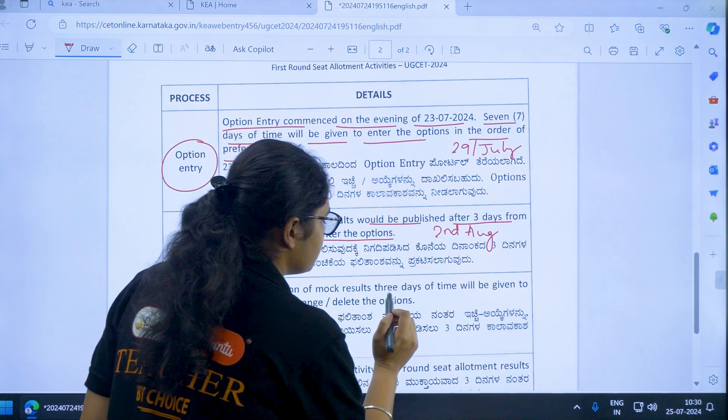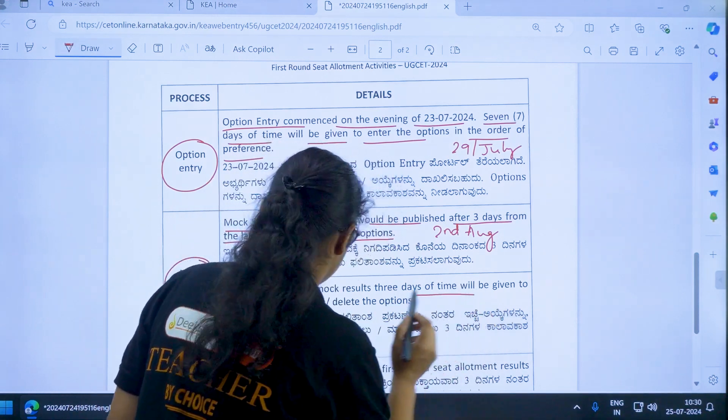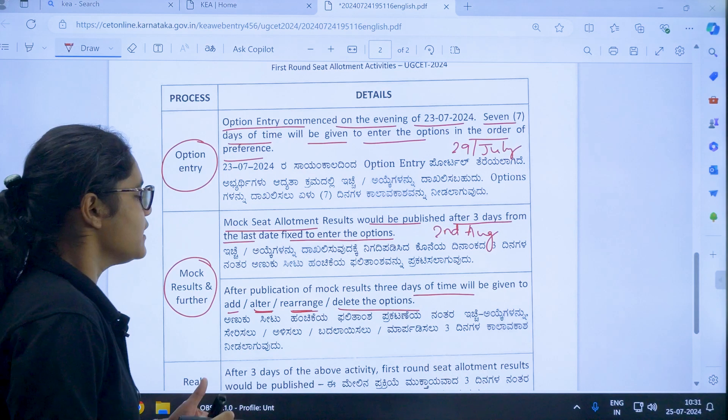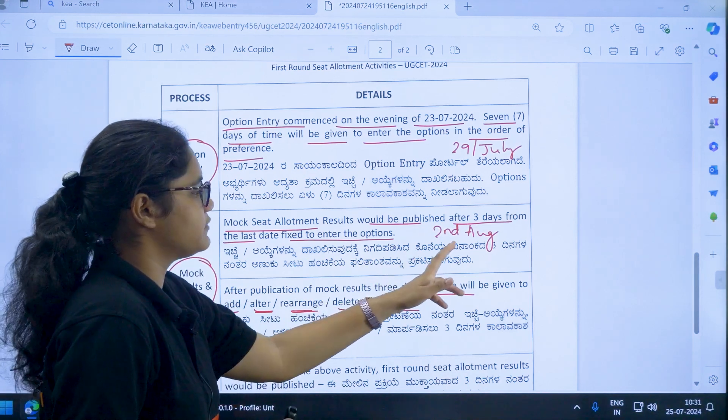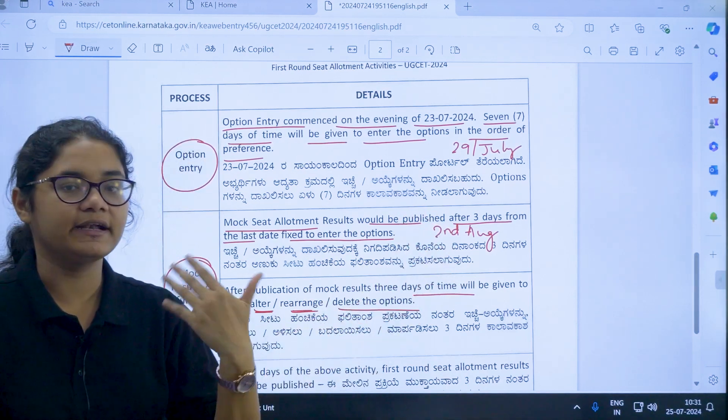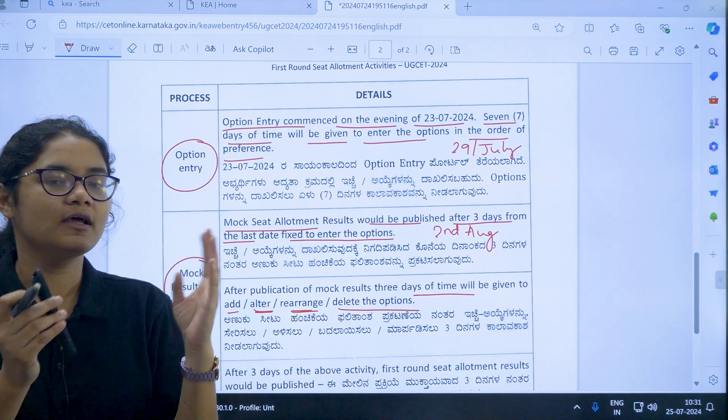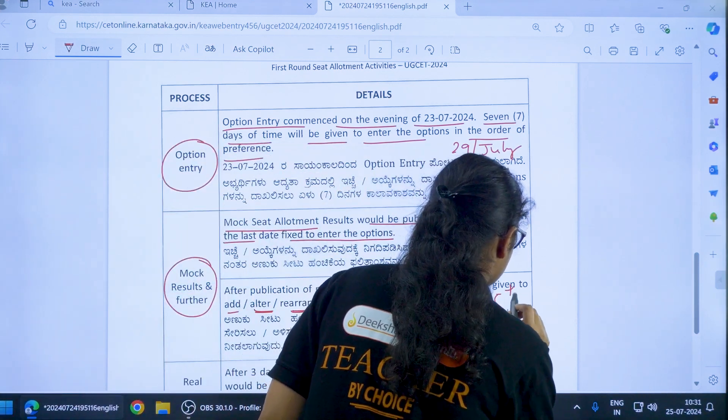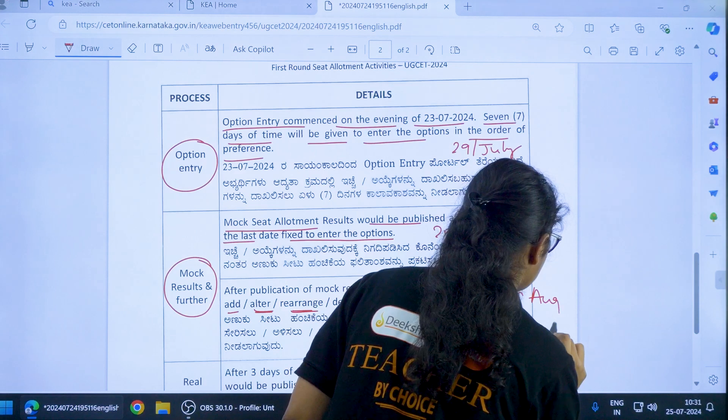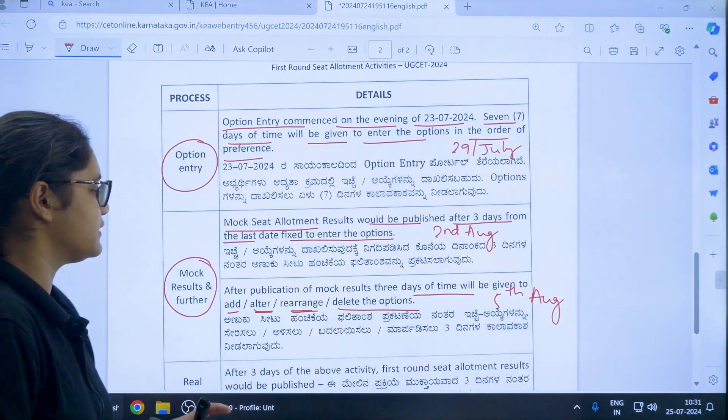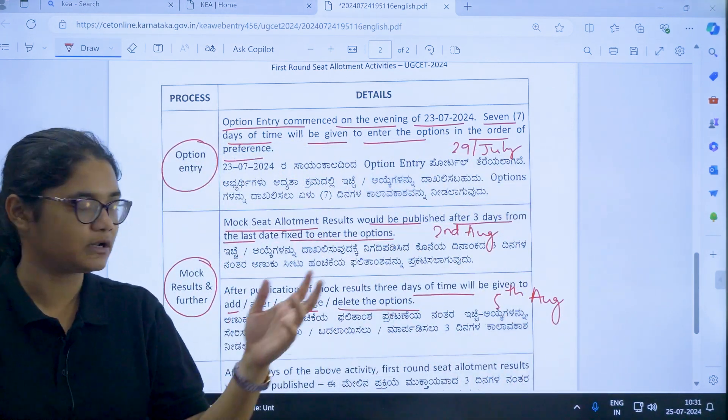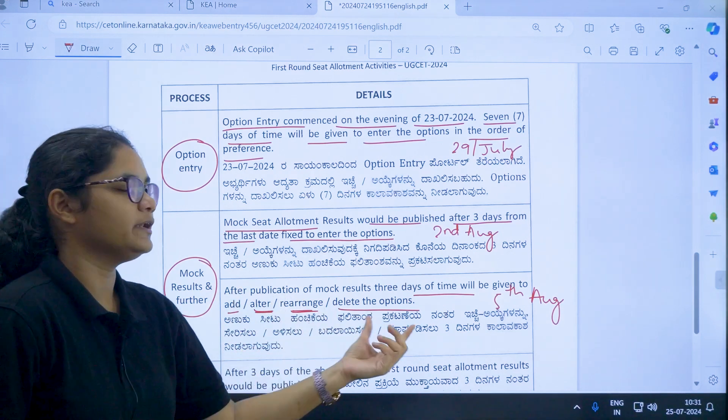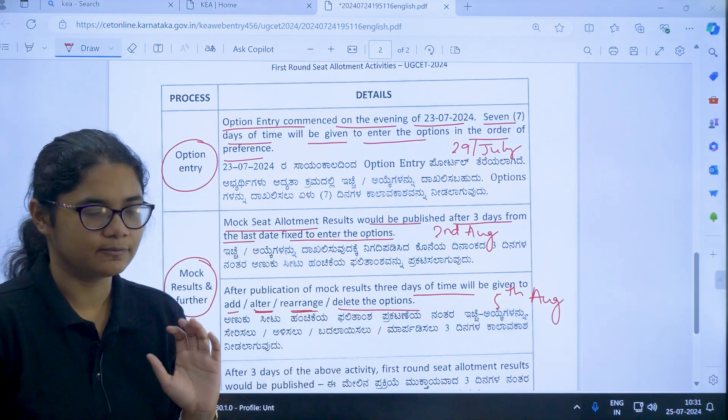After publication of mock results, 3 days of time will be given to add, alter, rearrange or delete the options. So after the publication of the results that is 2nd of August, 3 days of time will be given. So you can expect 3rd, 4th and 5th August. So till 5th of August you will be having the time to make any changes. What are the changes that you can make? You can add, alter, rearrange or delete the options in your preference list.